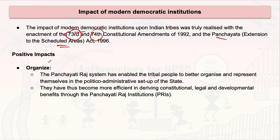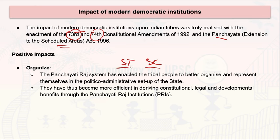Regarding the impact of modern democratic institutions on tribals, there are certain positive impacts. Since STs and SCs — because we talk about weaker sections here — there are reservations in PRIs. Previously, tribal communities were organized by their own chiefdoms and their own law and order systems. But now, since modern democratic institutions exist, certain processes are planned through legislation.